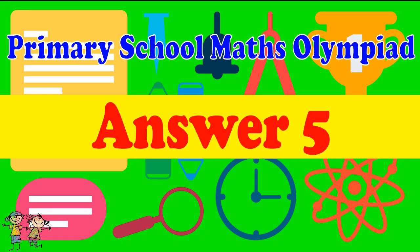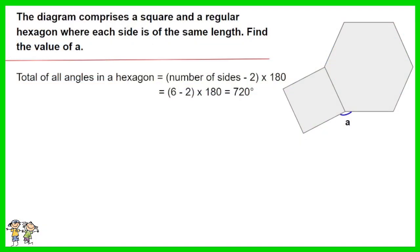Answer for question 5: Total of all angles in a hexagon equals number of sides minus 2, then times 180. The result is 6 minus 2 then times 180, which gives you 720 degrees.